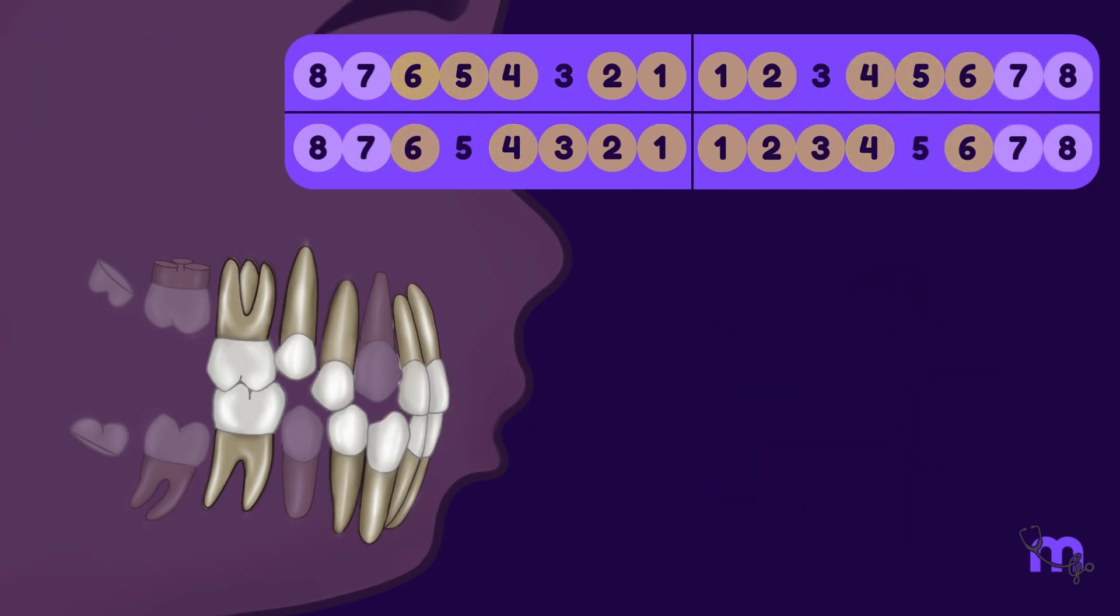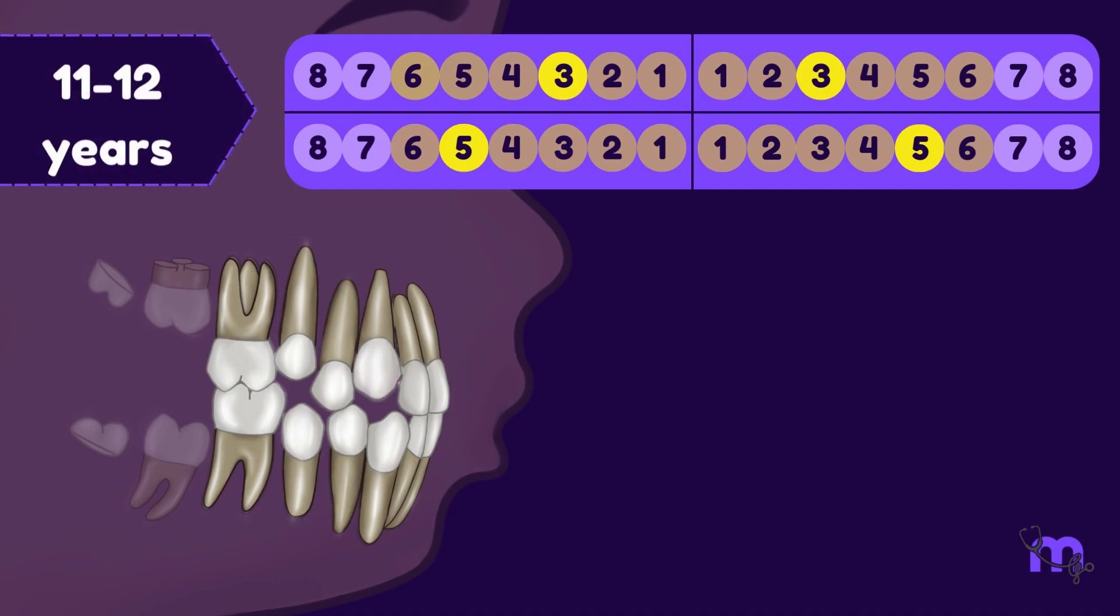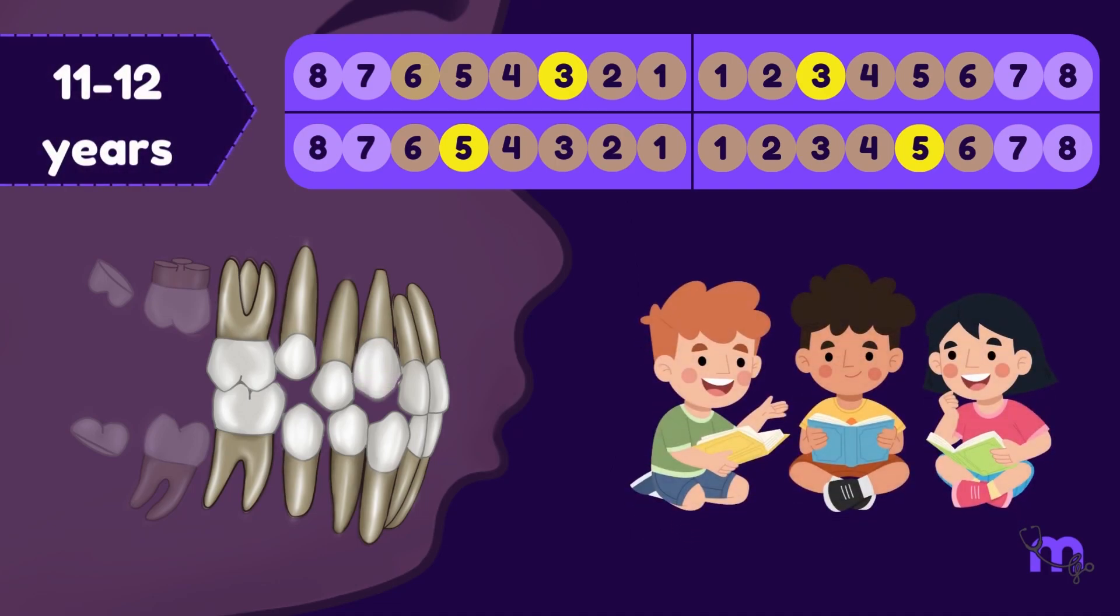With the progress of dental maturation, alliances continue as the mandibular second premolar and maxillary canine rise together at 11-12 years, showcasing shared experiences and growth.